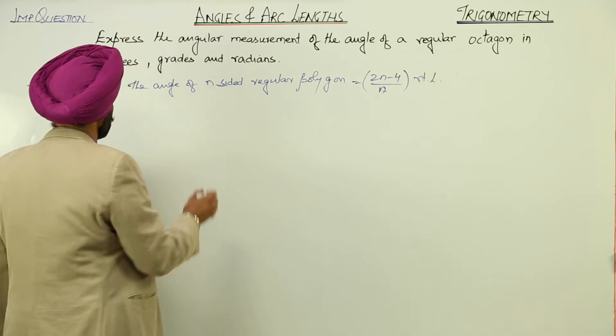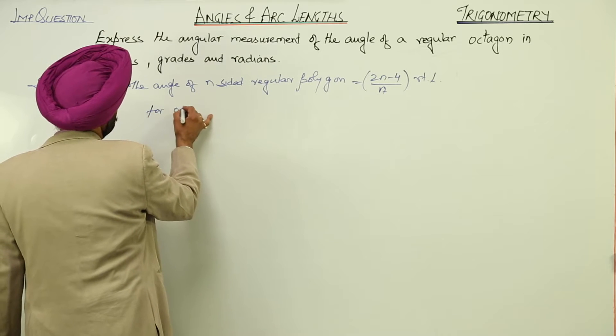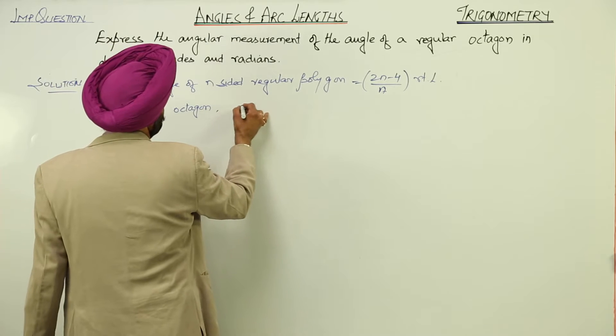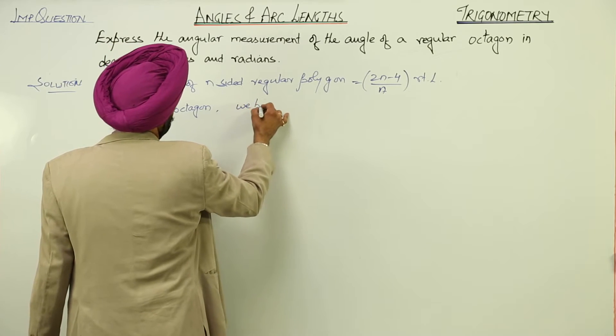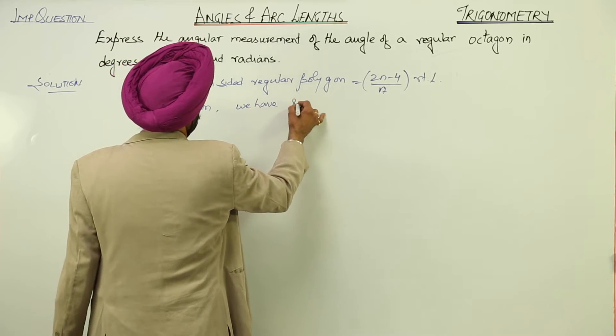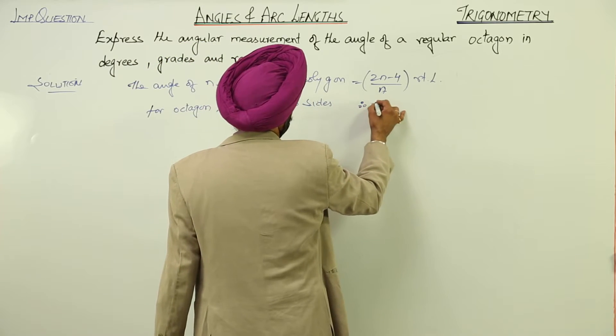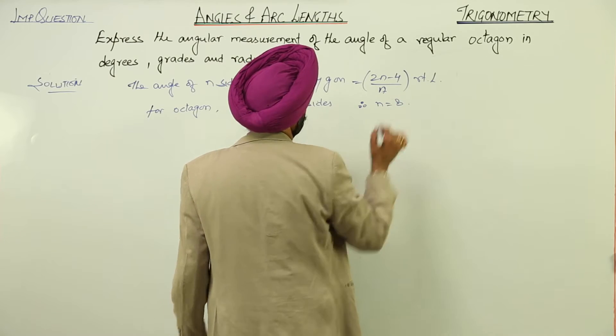Now for octagon, we have 8 sides. Therefore, n is equal to 8.